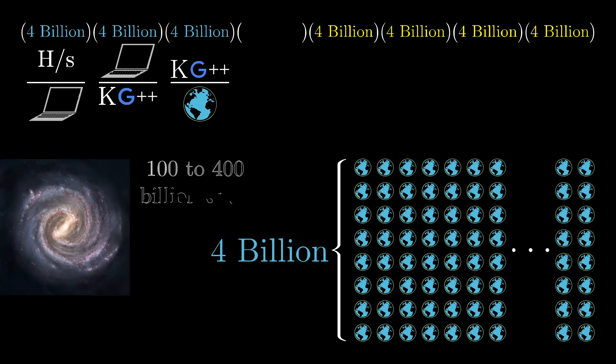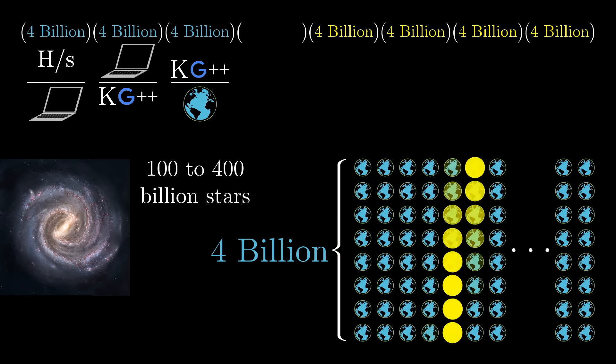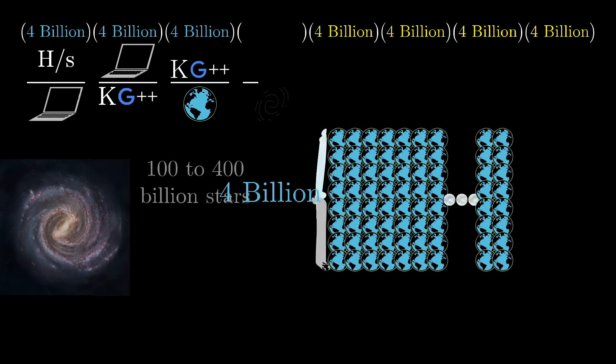For comparison, the Milky Way has somewhere between 100 and 400 billion stars. We don't really know, but the estimates tend to be in that range. So this would be akin to a full 1% of every star in the galaxy having a copy of Earth, where half the people on that Earth have their own personal kilogougle.